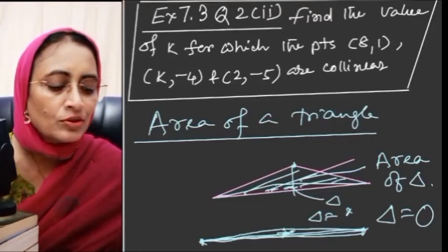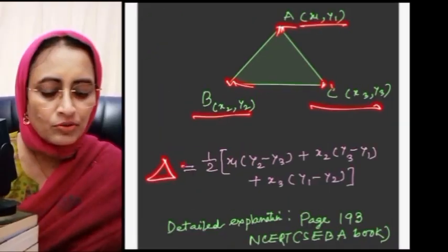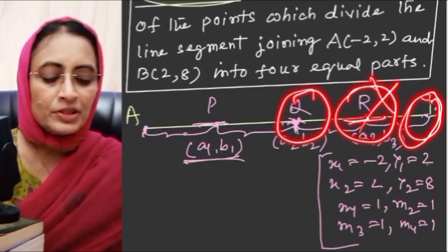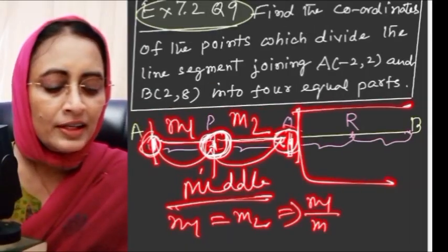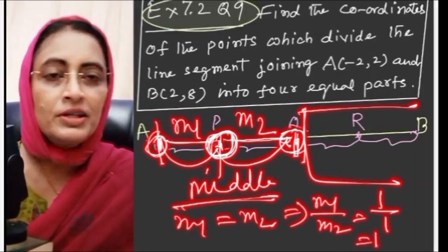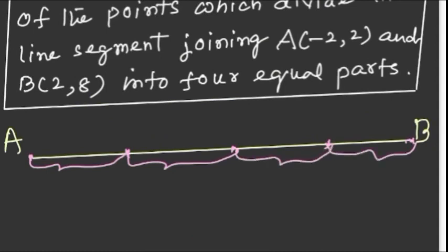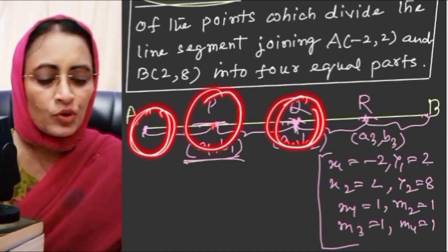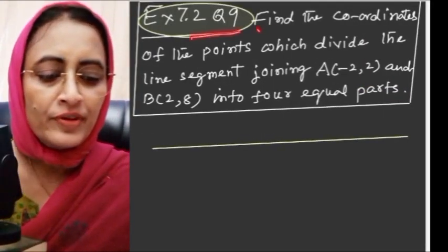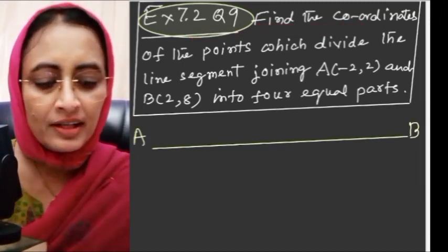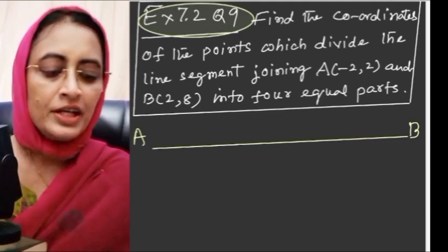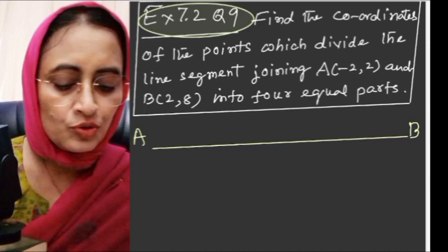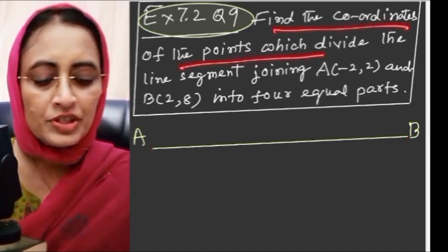The area formula is: Area = half into (x1(y2 - y3) + x2(y3 - y1) + x3(y1 - y2)). Also, 1/m2 = 1:1. According to the question, we need to find the coordinates of the points which divide the line segment joining A(-2, 2) and B(2, 8) into four equal parts.